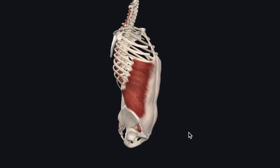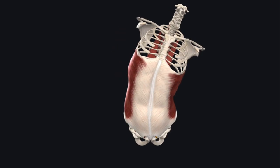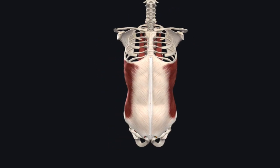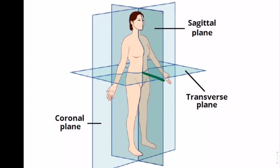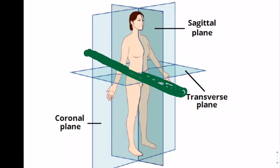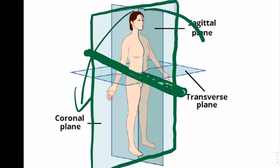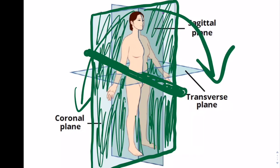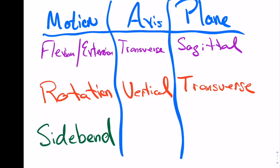We're also going to be discussing side bending — side bending one way and side bending back towards the other way. If you had a pole going straight through this person, we can see that if the person side bends this way or the other way, it's basically going around this rod. Therefore, for side bending, the axis is called an AP axis — AP stands for anterior posterior axis. When you're side bending to the left and right, the available plane is the coronal plane. So for side bending, we have the anterior posterior axis and the coronal plane.